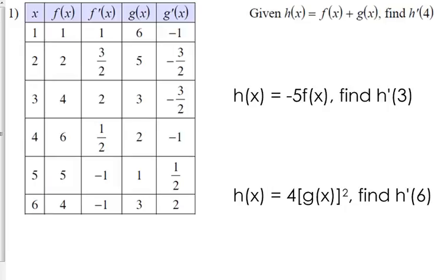They give you select x values, 1 through 6 in this case, then they give you f of x, f prime of x, g of x, and g prime of x, and they give you those select values. We don't know what the function f of x is, we don't know what the function g of x is or what their derivatives are, but we do know these select values about it.